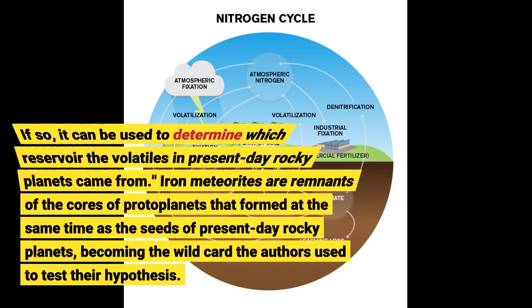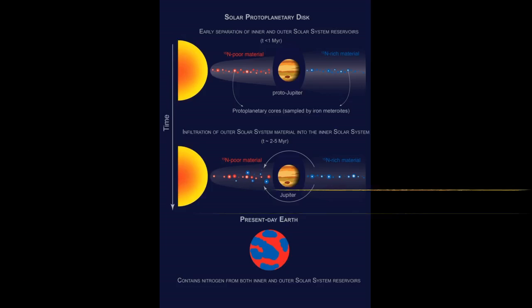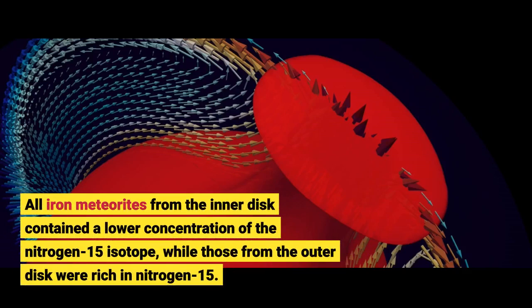We wanted to see if this is true for volatile elements as well. If so, it can be used to determine which reservoir the volatiles in present-day rocky planets came from. Iron meteorites are remnants of the cores of protoplanets that formed at the same time as the seeds of present-day rocky planets, becoming the wild card the authors used to test their hypothesis. The researchers found a distinct nitrogen isotopic signature in the dust that bathed the inner protoplanets within about 300,000 years of the formation of the solar system. All iron meteorites from the inner disk contained a lower concentration of the nitrogen-15 isotope, while those from the outer disk were rich in nitrogen-15.